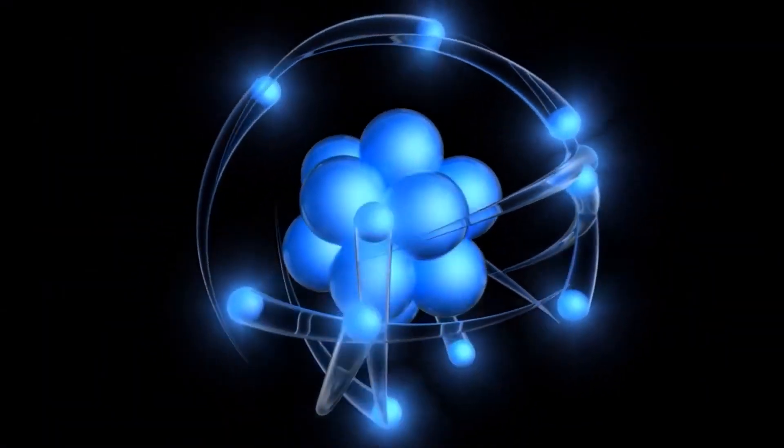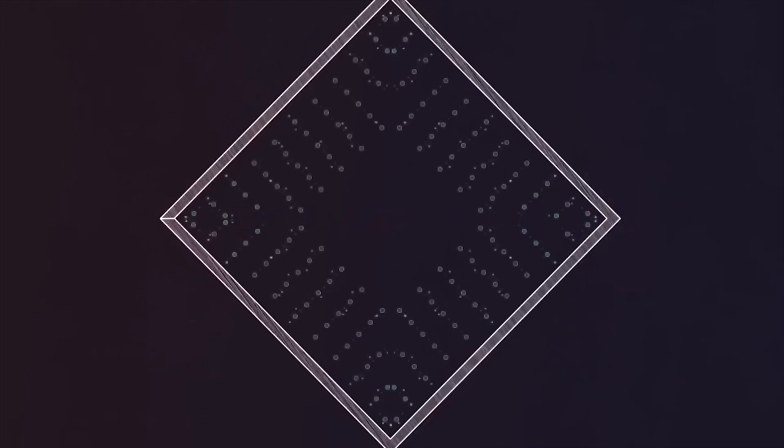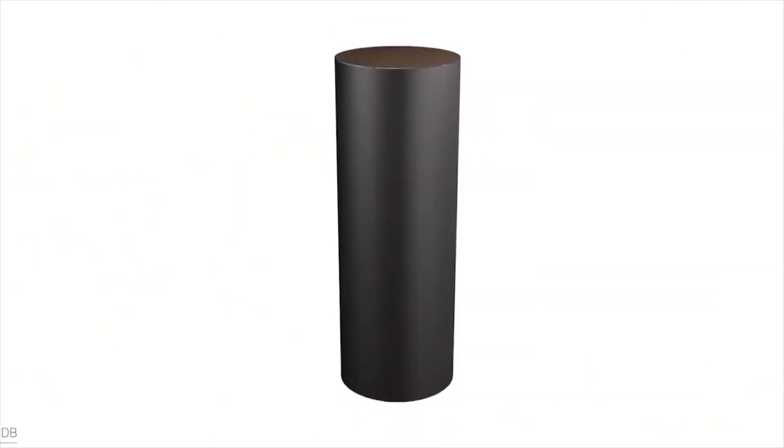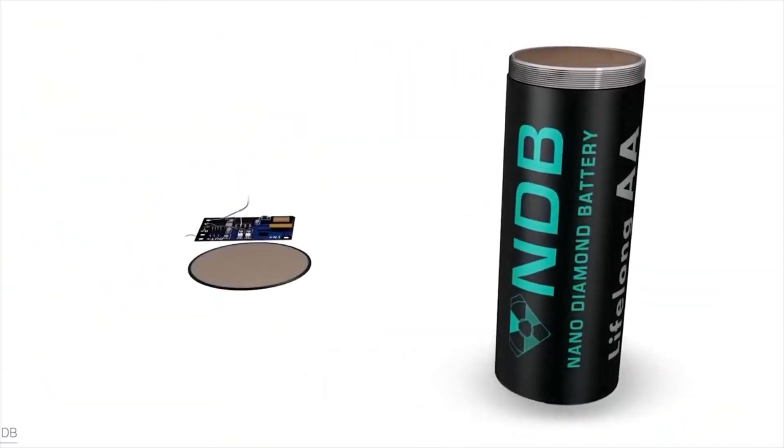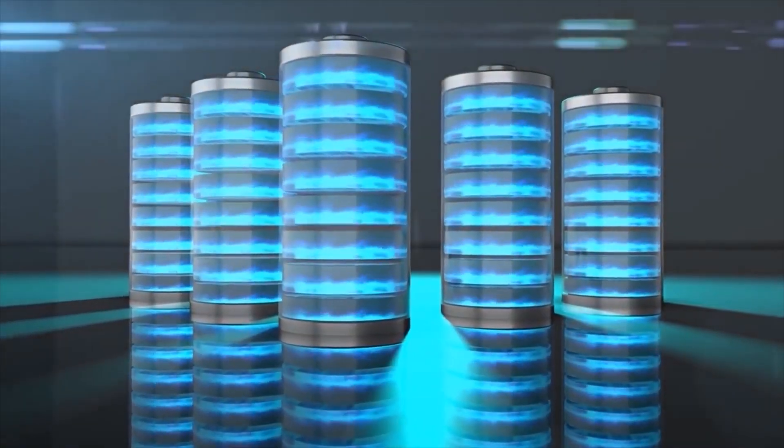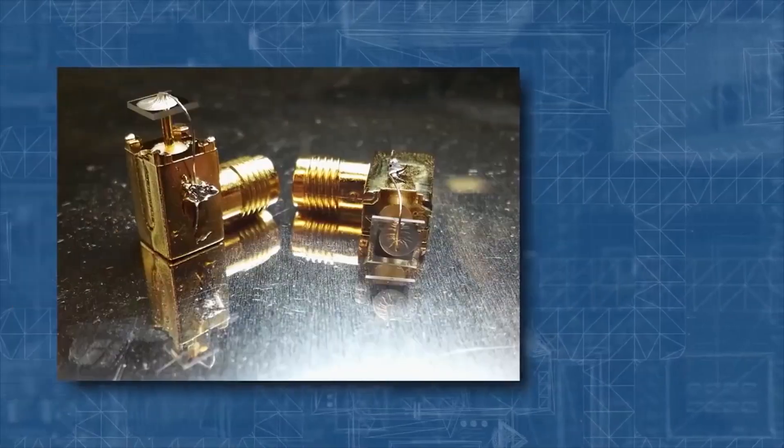On the other hand, the diamond battery is a beta-voltaic, which is similar to a photovoltaic solar cell. It transforms beta radiation into electricity, as opposed to turning light into electricity.